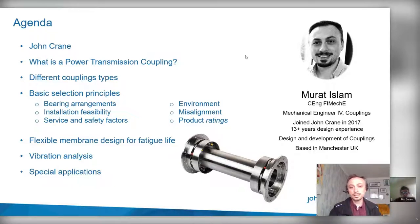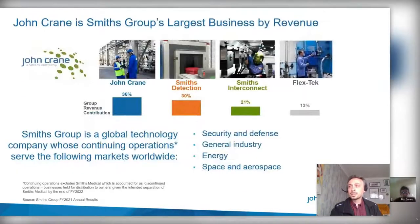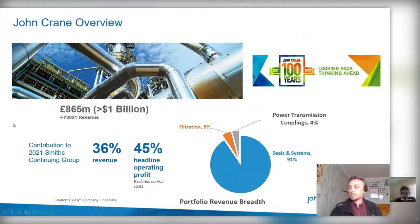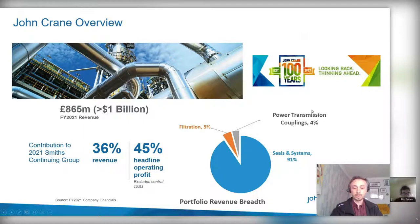John Crane is part of the larger Smiths Group, a global technology company serving security and defense, general industry, energy sectors, space and aerospace. John Crane is the largest revenue contributor to the group. It is mainly a sealed systems company — the power transmission couplings business is actually quite small compared to the seals side — and there are many collaboration projects developing products across the board.